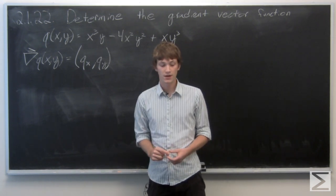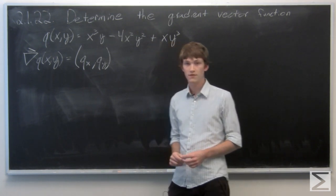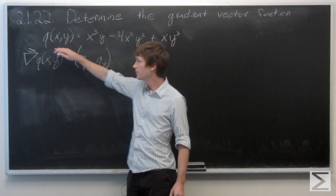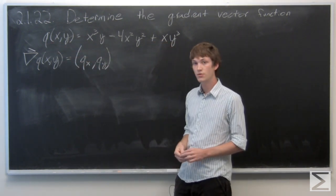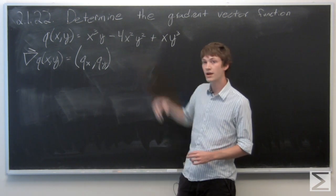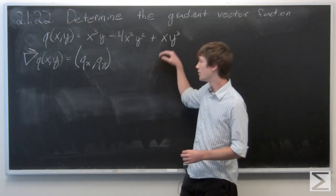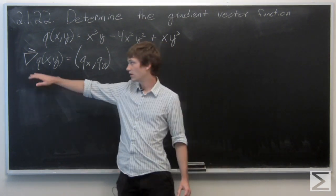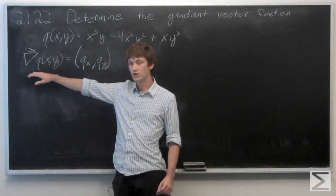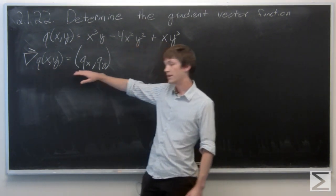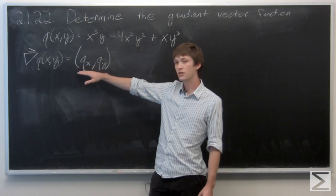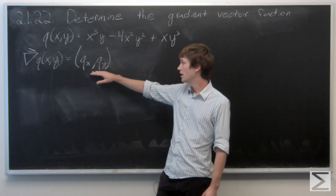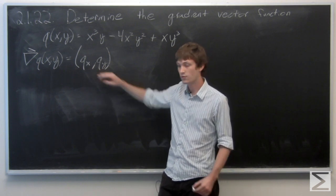In this problem we're asked to find the gradient vector function of q of xy, which is x cubed y minus 4x squared y squared plus xy cubed. We remember that the gradient vector function is defined as the components: the partial derivative with respect to x of q, and the partial derivative of q with respect to y.